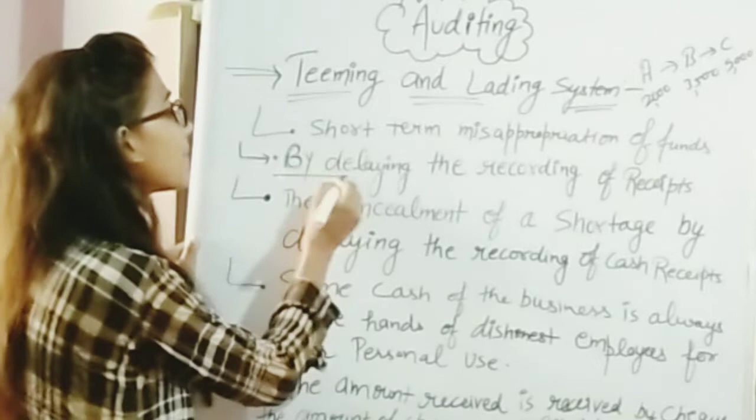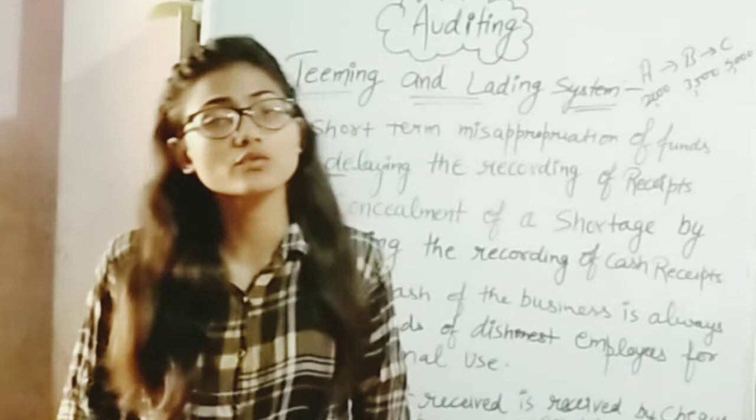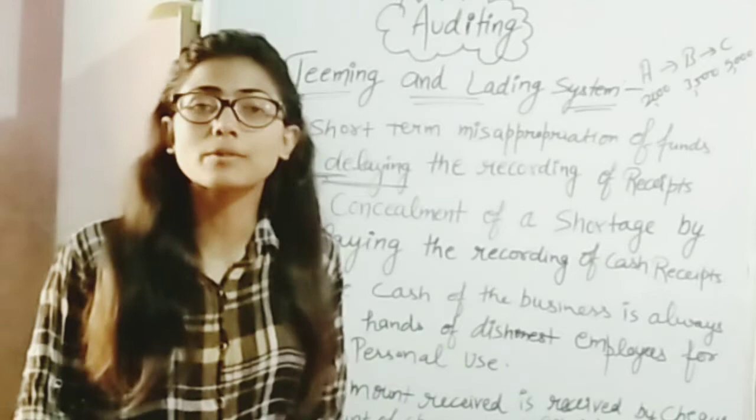The next point is delaying the recording of receipts. When an employee receives cash, for example from a debtor who has to pay money, they delay recording that receipt. They hold the money and do not record it immediately.